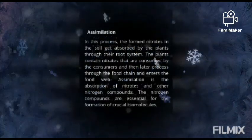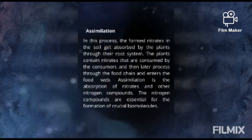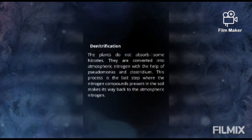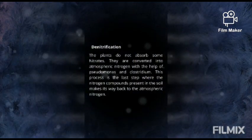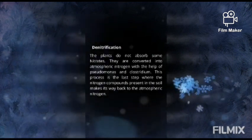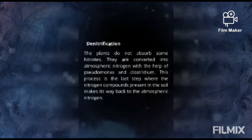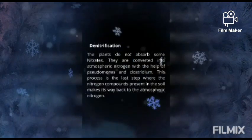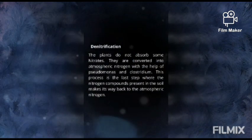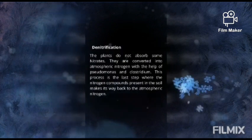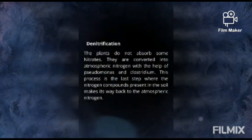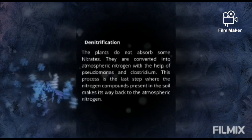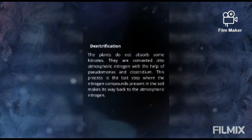The plants contain nitrates that are consumed by consumers and then processed through the food chain into the food web. Assimilation is the absorption of nitrates and other nitrogen compounds. Denitrification: the nitrates not absorbed by plants are converted back into atmospheric nitrogen with the help of Pseudomonas and Clostridium. This last step returns nitrogen compounds present in the soil back to atmospheric nitrogen.